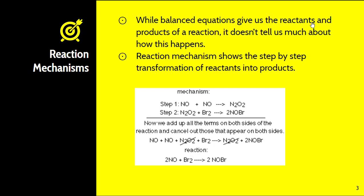Let's get started talking about reaction mechanisms. Balanced equations give us reactants and products, but they don't tell us much about how the process happens. There are quite a few steps in between that give us a better understanding of how the reaction actually occurs. A reaction mechanism shows step-by-step the transformation of reactants into products.